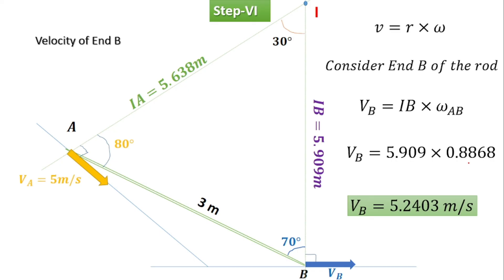By following these six steps, you can easily find the instantaneous center and the respective velocities of any endpoint using this method. First, identify and mark the velocities along the direction of movement. Then draw lines perpendicular to the velocities, locate the ICR, find the angles and respective lengths of the triangle, and finally use the formula V equals r omega. If you find this video helpful, share it with your friends, like the video, and subscribe to the channel. Thank you very much.